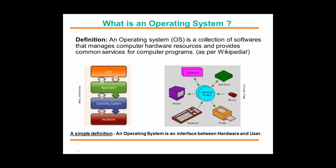To define an operating system in simple terminology: an OS or operating system is an interface between hardware and user. As you can see from the diagram, an operating system is an interface or mediator between hardware components and software.